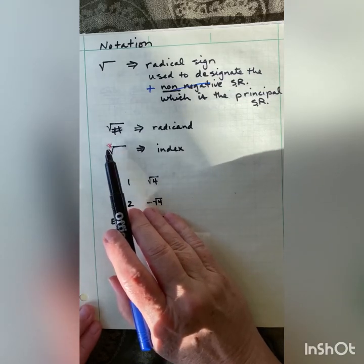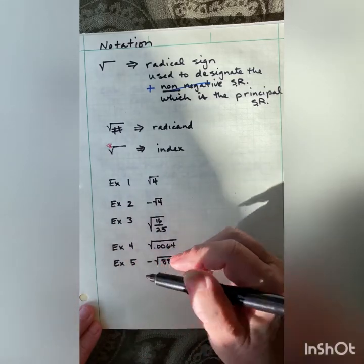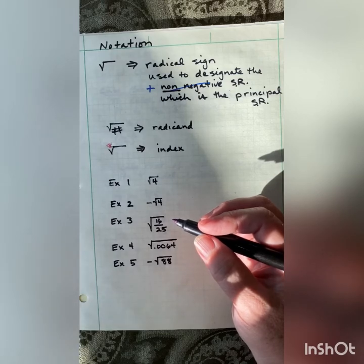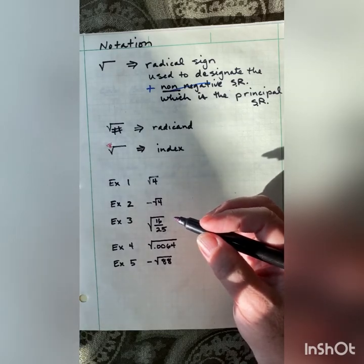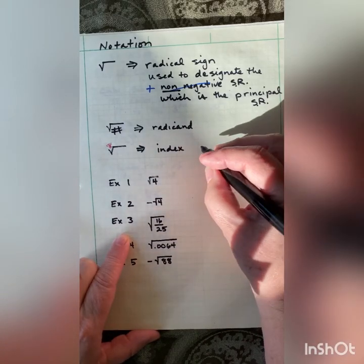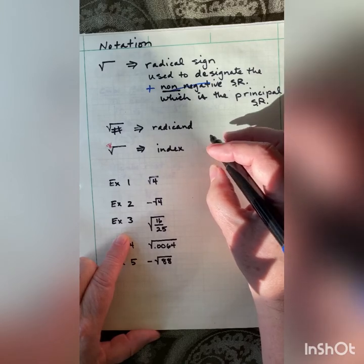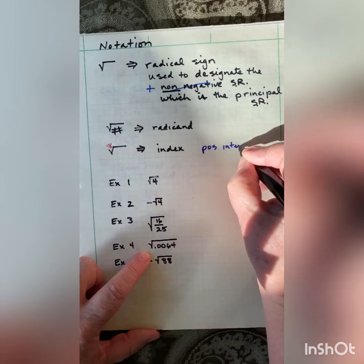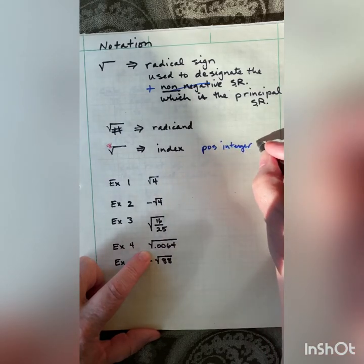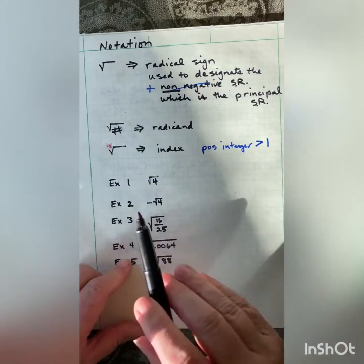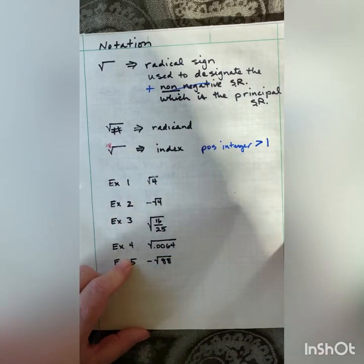If there is nothing there, it's an implied 2. If there is another number there, it is called the index and it is a positive integer greater than 1. So you could write a 2 — it's an implied 2, and it's not hurting a thing. It could also be a 3, 4, 5, something like that.